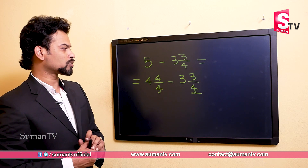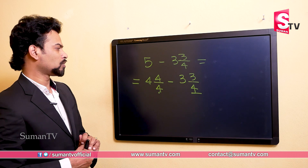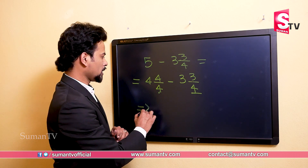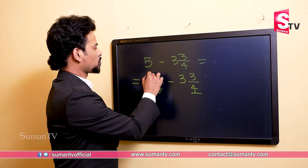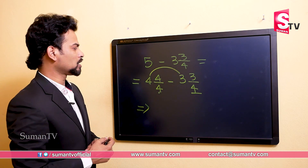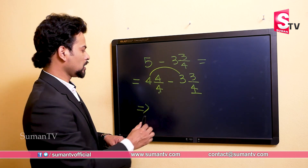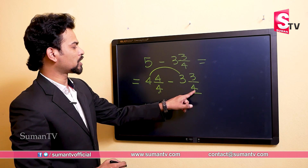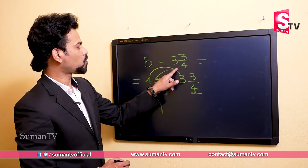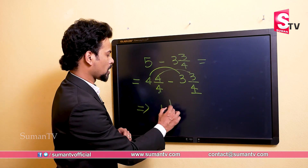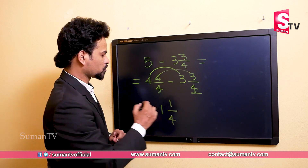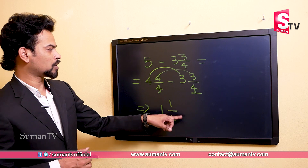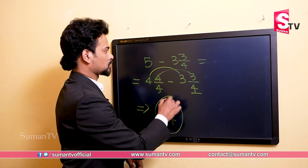So it is like this — we have completed the setup. Finally what we can do is subtract: four minus three is one, and because the denominators are the same, the answer is one by four.